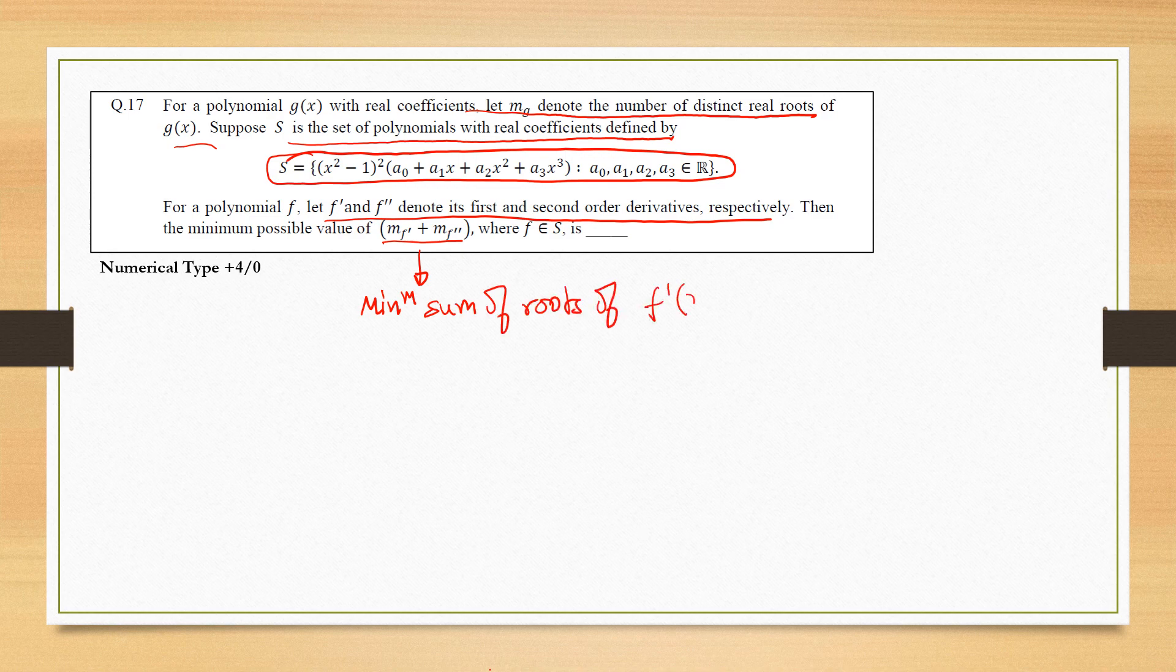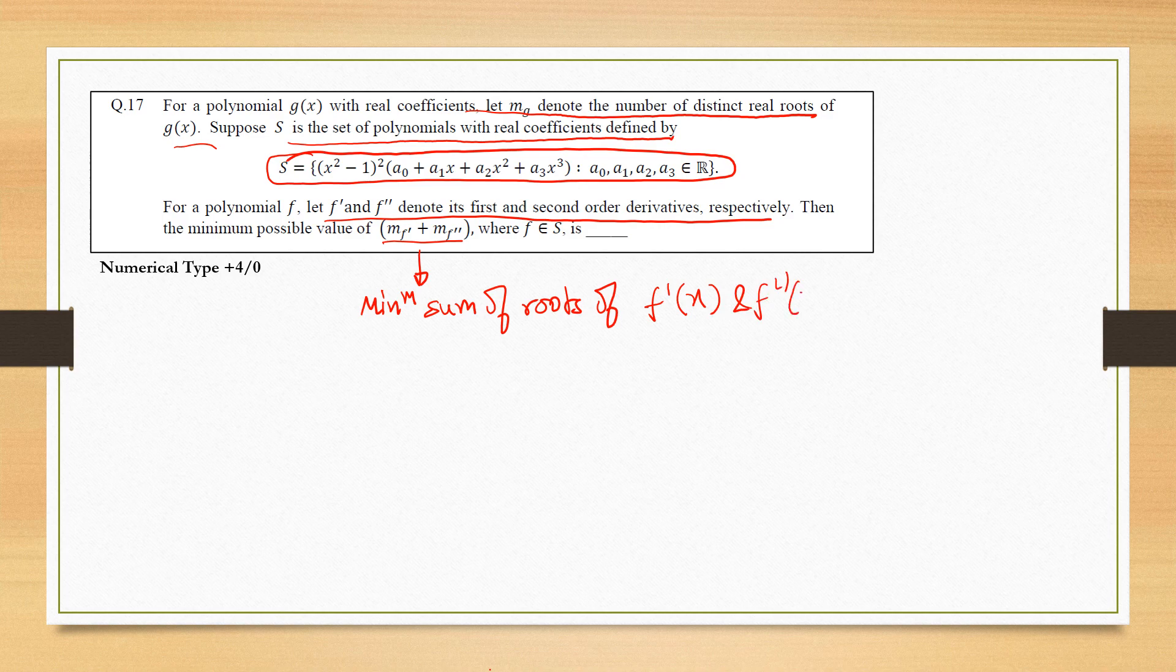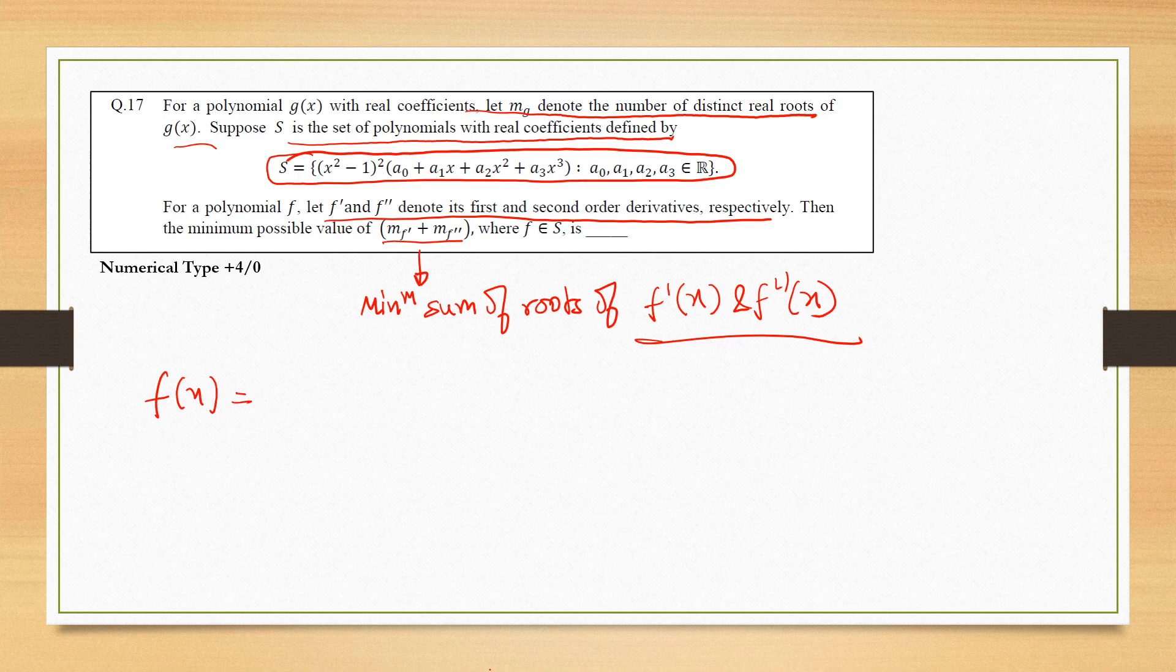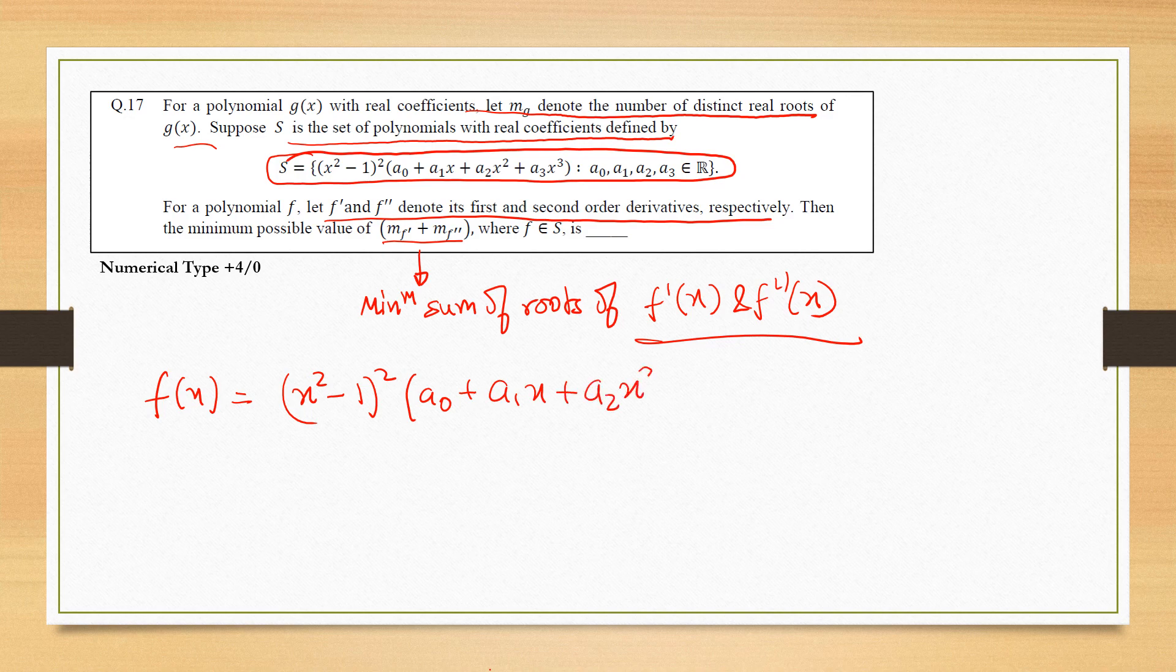So we are given f(x) = (x² - 1)²(a₀ + a₁x + a₂x² + a₃x³).